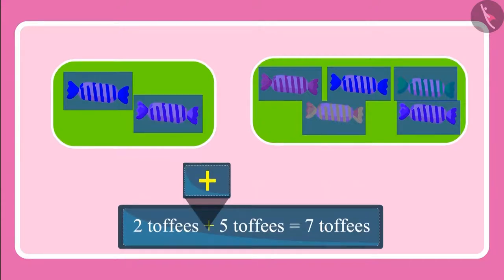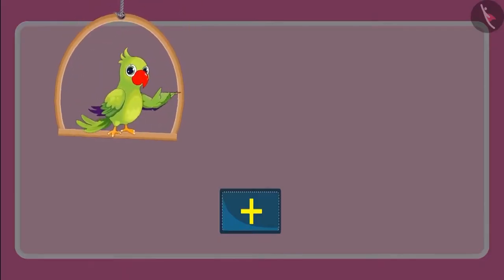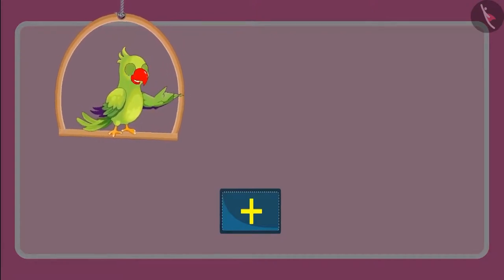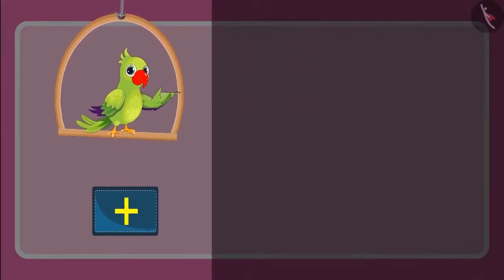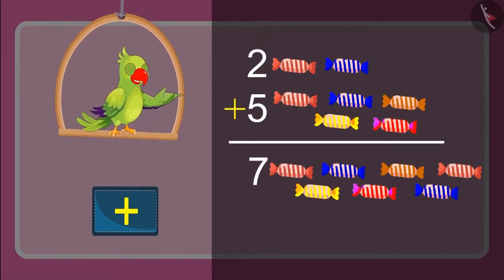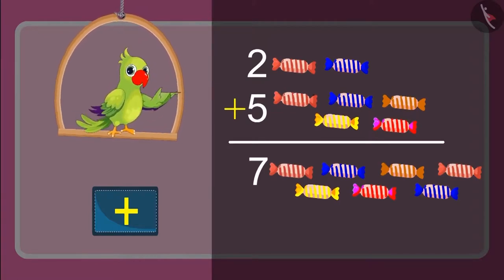Children, do you know what symbol is this? Yes, this is a symbol of addition. We can write it in one more way. This means when we added five toffees to two toffees, then we got seven toffees. You also got the same answer, right?